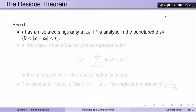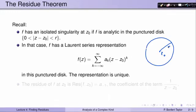Let me remind you of the residue theorem. Suppose f is a function that is analytic except for an isolated singularity — that means f is analytic in a punctured disk centered at c0, with the exception of c0. In that case, f has a Laurent series representation in that punctured disk, which is a doubly infinite series of terms a_k times (z minus c0) to the k, where k runs from negative infinity to positive infinity.